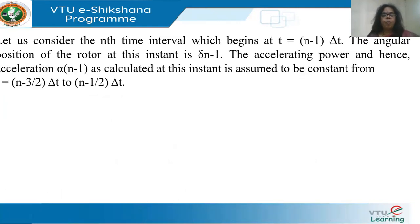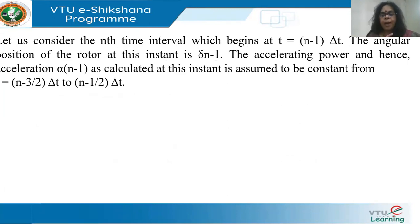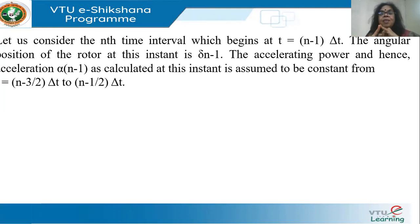Consider the nth time interval which begins at t = (n−1)·Δt. The angular position at this point is δₙ₋₁. The accelerating power depends on acceleration, which I represent as α. I have three parameters: δ is the angular position, ω = dδ/dt is the angular velocity, and α = dω/dt is the angular acceleration.